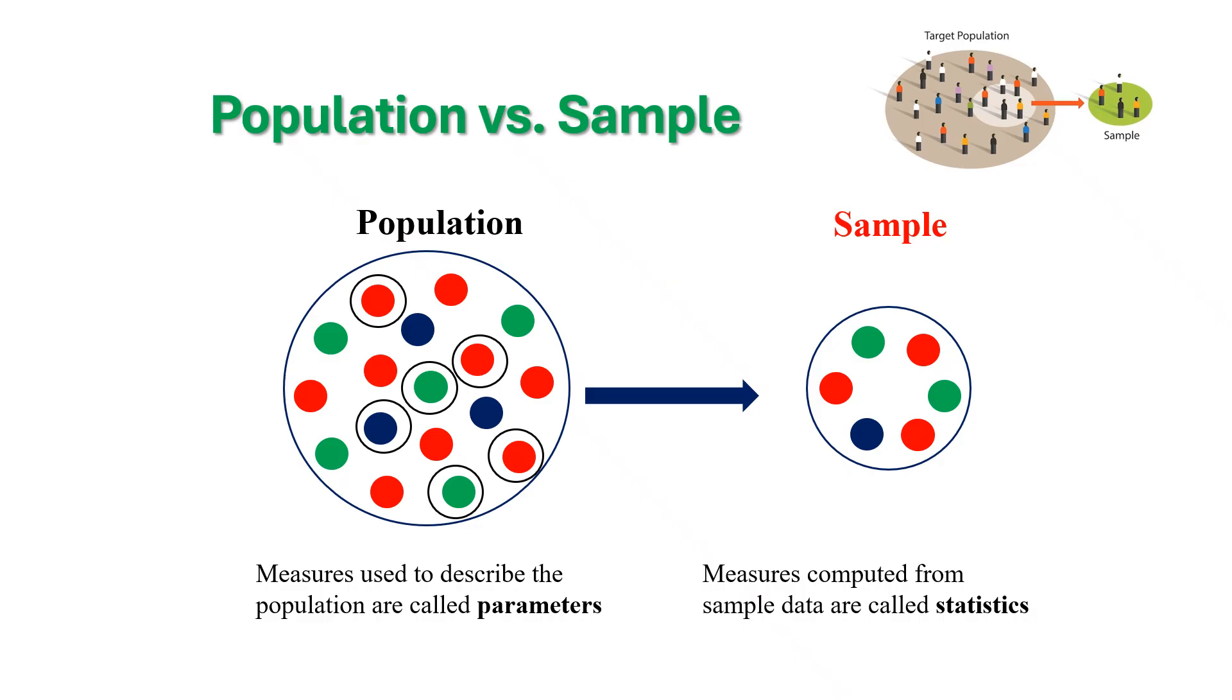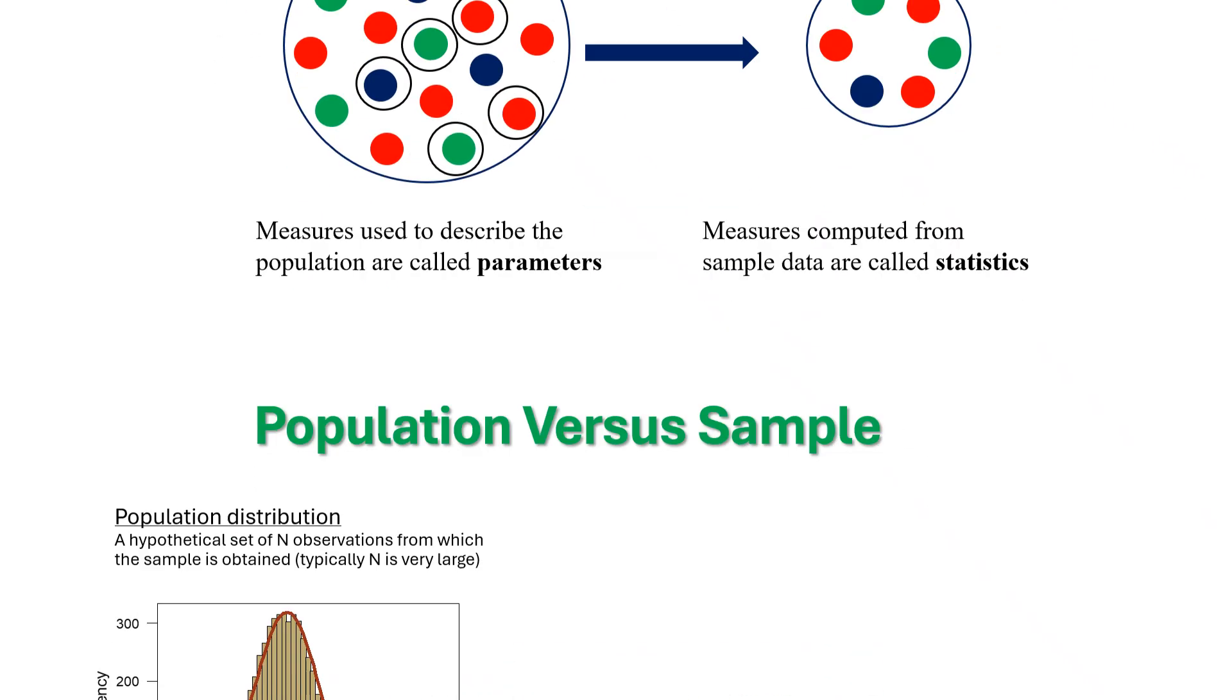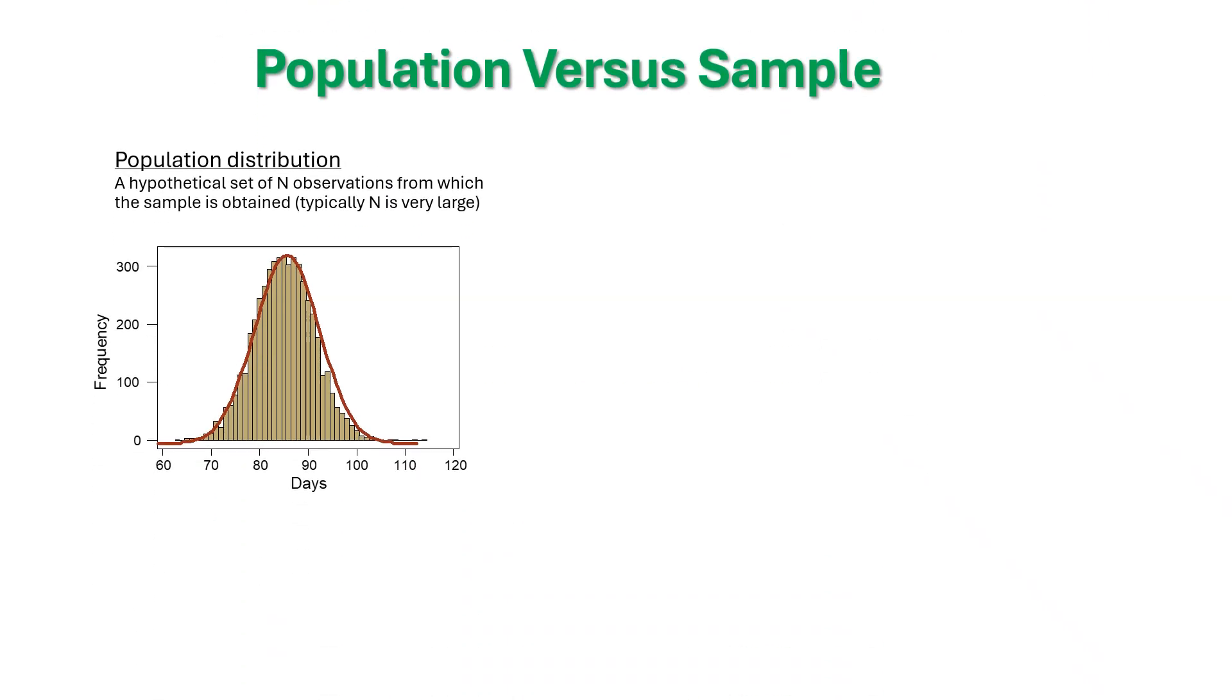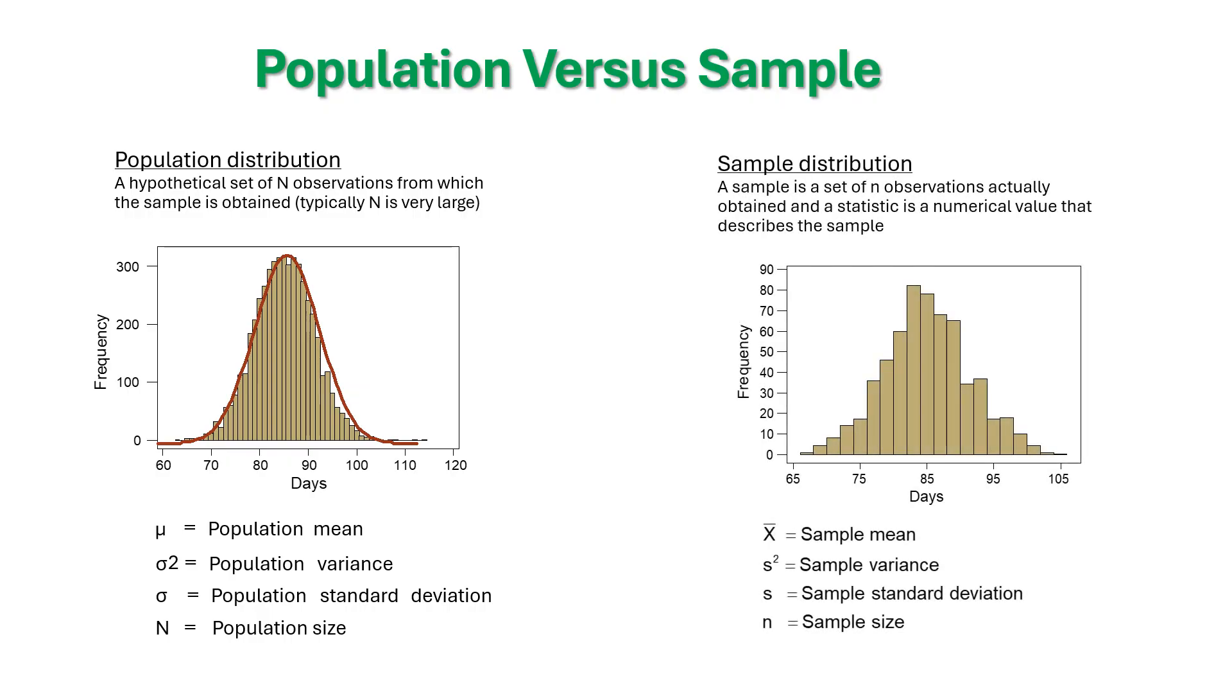These two important terminologies are very important to understand the whole concept of normal distribution. Suppose this is your population distribution, and the characteristics, population mean, population variance, etc. Similarly, the same way you can get it. If the sample is done appropriately, definitely it will retain all the characteristics of the population. And that kind of sample is considered to be best.